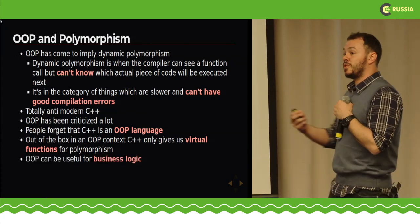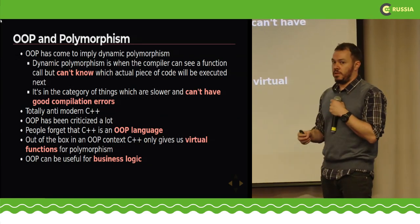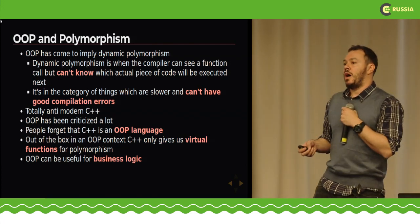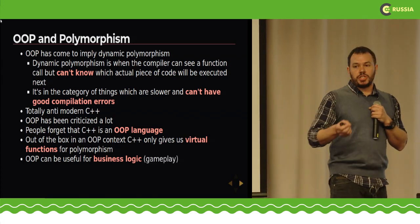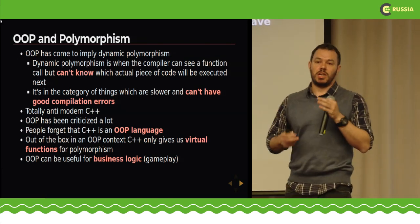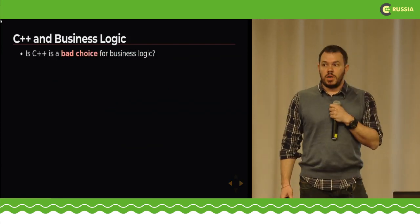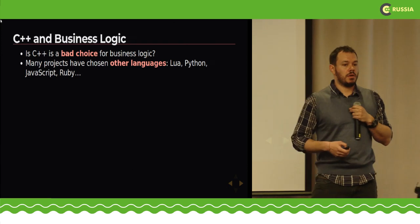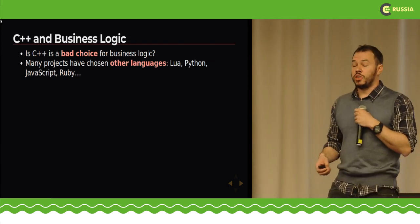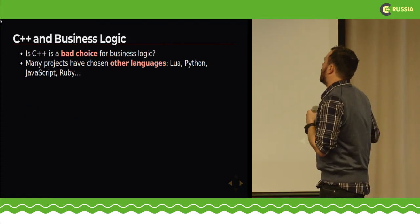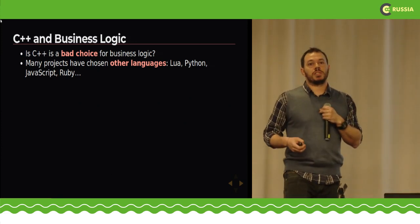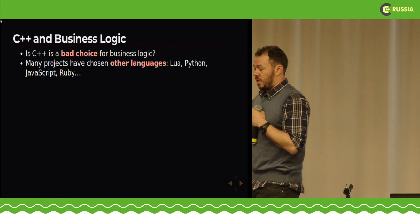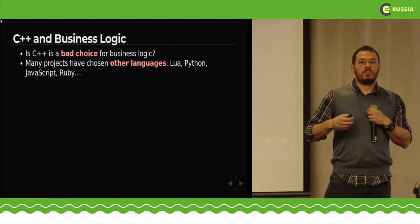My proposition is that that's not a problem with object-oriented programming as a whole. Object-oriented programming is a great way to handle business logic — in the game industry we call it gameplay. Some people have gone on to say that C++ is a bad choice for business logic, and thus use another language alongside C++. Many projects use languages like Lua, Python, JavaScript, or Ruby alongside C++ to have great OOP power while keeping a C/C++ core for performance-critical parts.